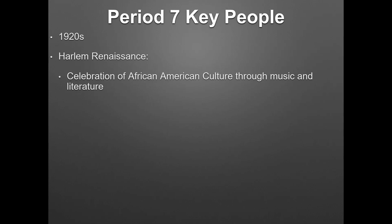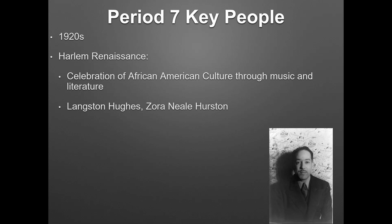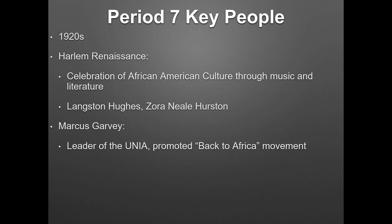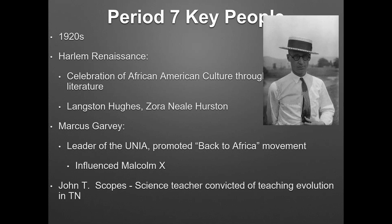We have the Harlem Renaissance in this time period — a celebration of African American culture through music and literature. You have Langston Hughes, Zora Neale Hurston — both authors. Marcus Garvey formed the UNIA and promoted African Americans to move back to Africa — he will influence people like Malcolm X. John T. Scopes in the 1920s was a science teacher who taught evolution. He'll be tried by Tennessee — this is where you get the Scopes Monkey Trial, which shows the whole conflict between fundamentalism versus modernism.